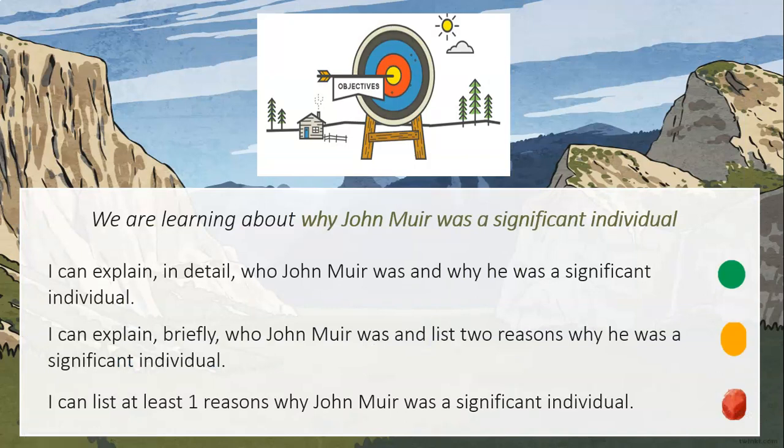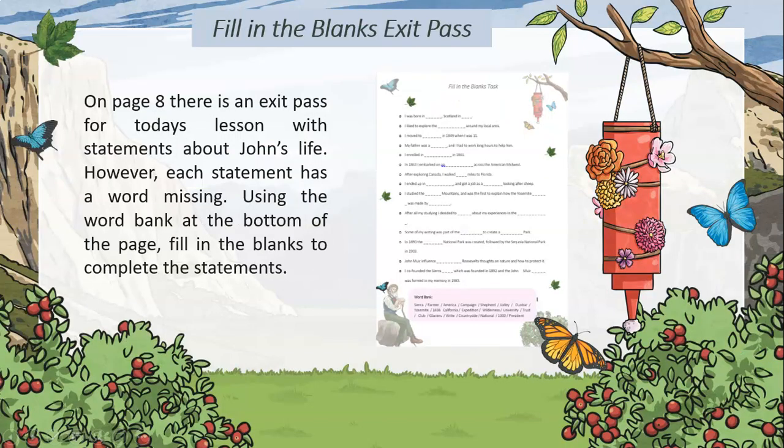That's us coming to the end of the lesson. Check and see if you've achieved the success criteria you chose at the start. Can you now explain in detail who John Muir was and why he was a significant individual? Or can you briefly explain who John Muir was and list two reasons why he was significant? Or can you at least list one reason why John Muir was a significant individual? Check page 7 to see how you've done — you might have achieved more than expected. Your final task is your exit pass: on page 8 of your booklet there are statements about John's life, each with a word missing. Using the word bank at the top of the page, fill in the blanks to complete the statements.